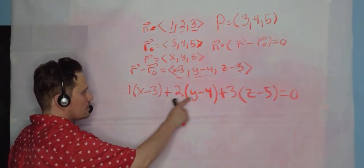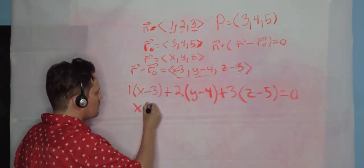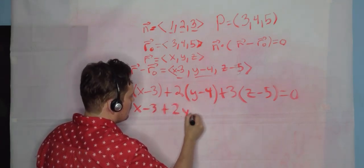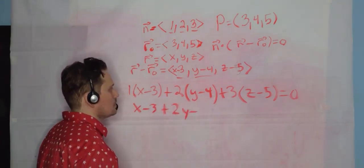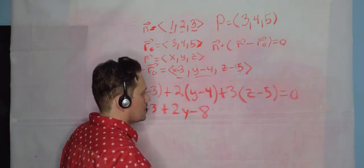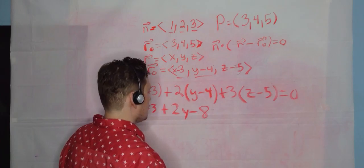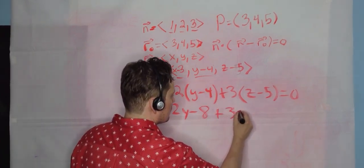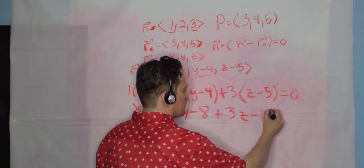So you're going to, now you're going to distribute the 1, the 2, and the 3. So it's going to be x minus 3 plus 2y minus, let's see, that's 8. And then the last one here, it's going to be plus 3z minus 15.